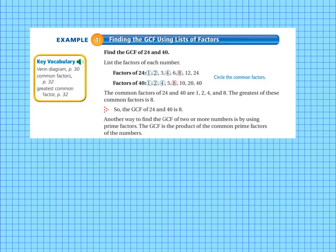Let's take a look at example 1. Finding the greatest common factor using lists of factors. It says list the factors of each number. Factors of 24, and it lists them out for you, and factors of 40.